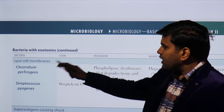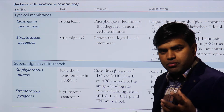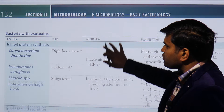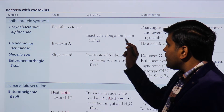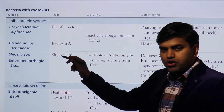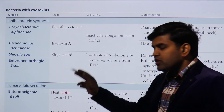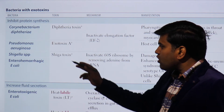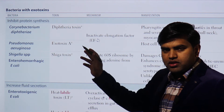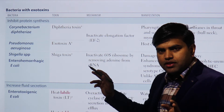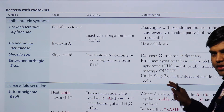Other mechanisms include lysing the cell membrane and acting as superantigens. Previously we covered exotoxins that inhibit protein synthesis — deadly organisms like Corynebacterium diphtheriae, which causes diphtheria by inactivating the elongation factor, and Pseudomonas aeruginosa, which acts by the same mechanism. Additionally, Shigella species and enterohemorrhagic E. coli (O157:H7) have Shiga toxin and Shiga-like toxin, which inactivate the 60S ribosomal subunit, inhibiting protein synthesis.